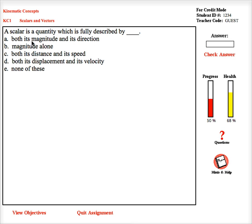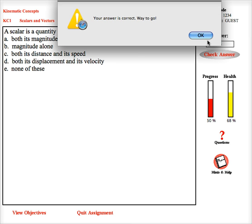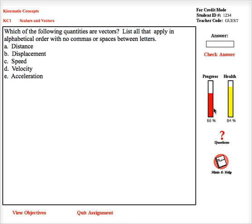A scalar's a quantity which is fully described by just magnitude. I'm making great progress on this assignment. I'm up to four-sixths of 100%. Now here's the one I missed before. I'm going to give this one my best. I think it's AC. Let's see what happens. Oh, no. Wrong again.